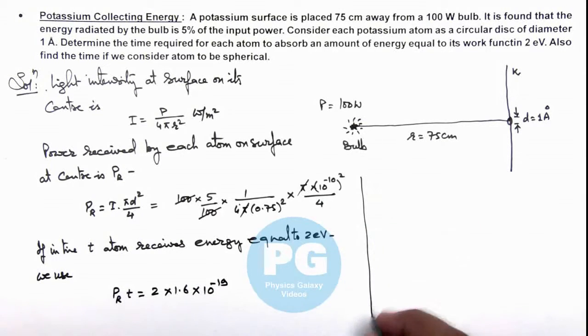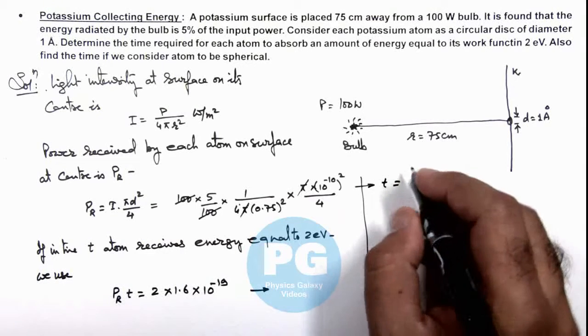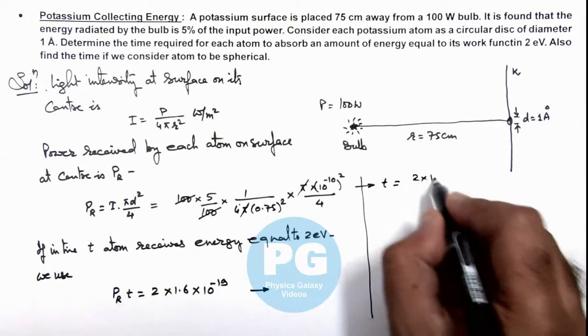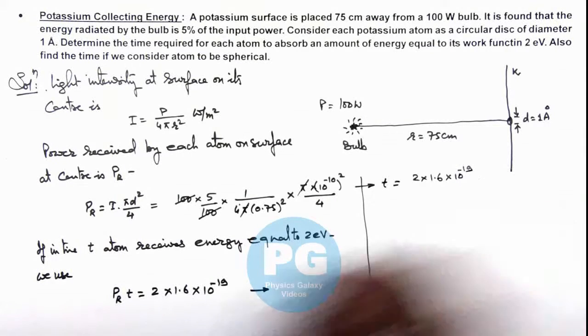We can write the value of time as 2 × 1.6 × 10⁻¹⁹ divided by the radiated power being received by the atom.